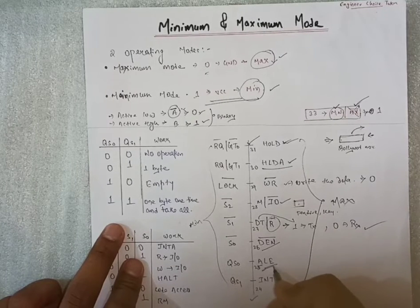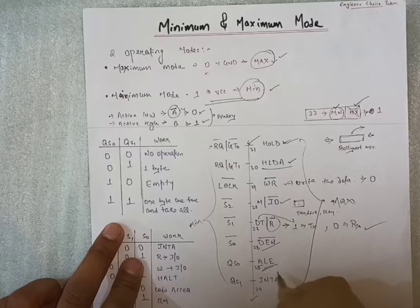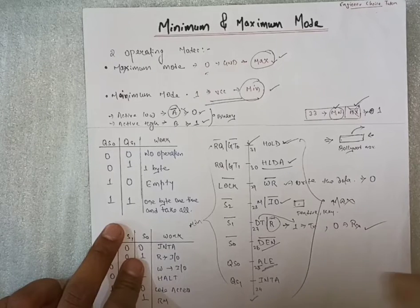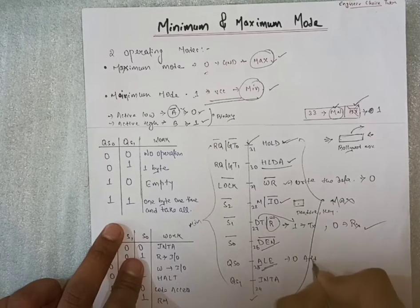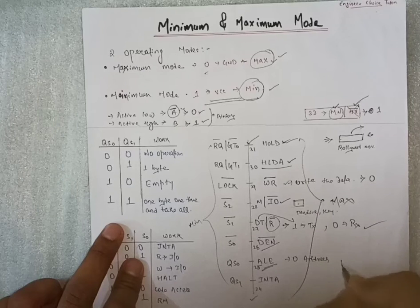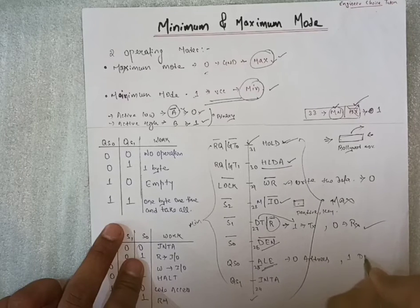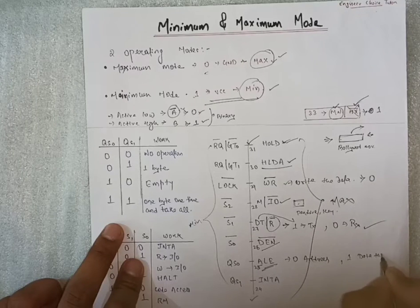ALE, address latch enable. When the value will be zero means address is passing. When value is one, data is taking.